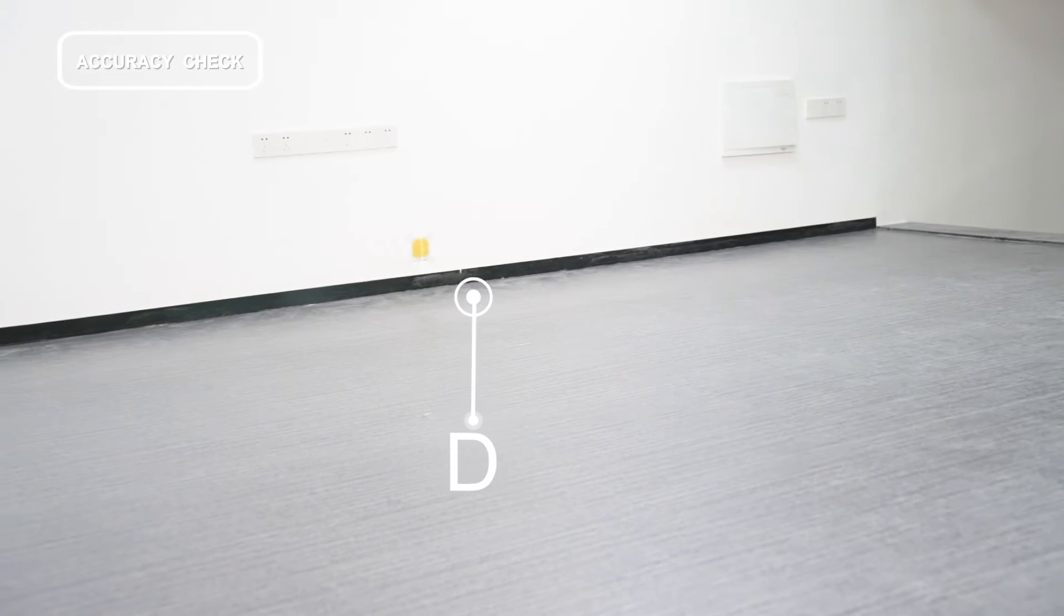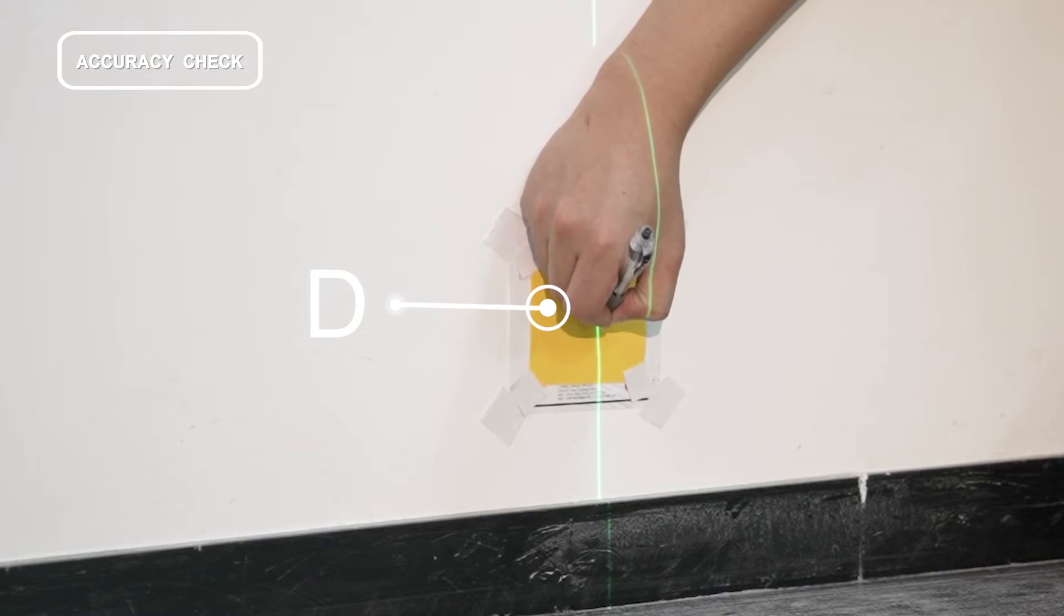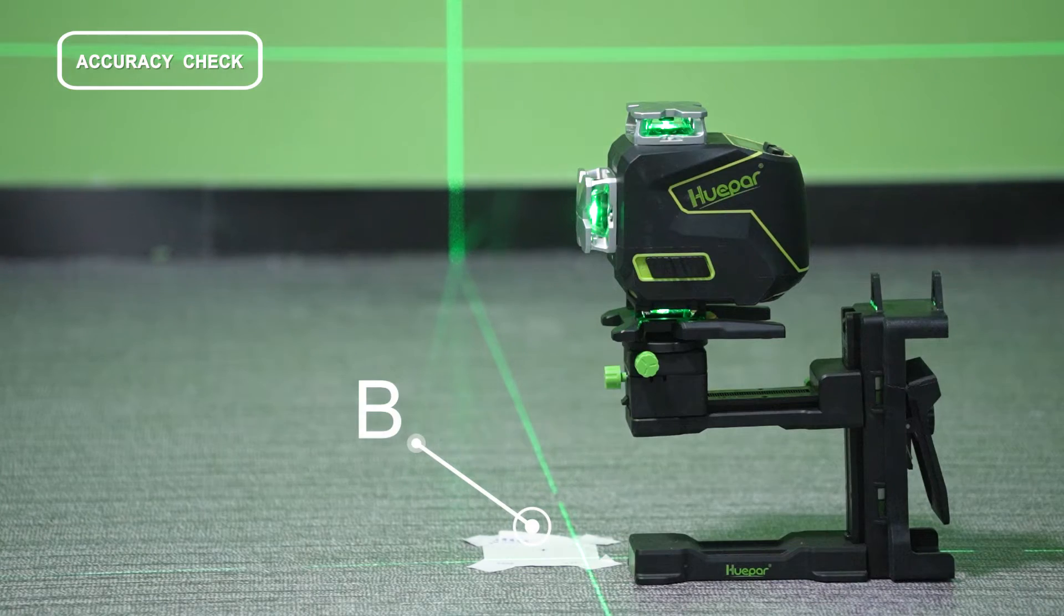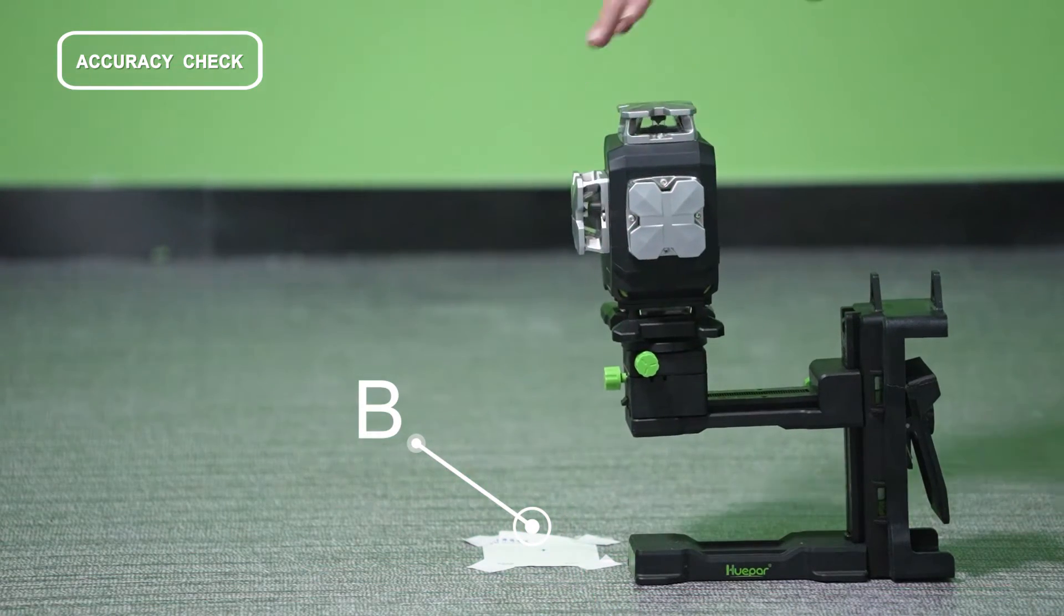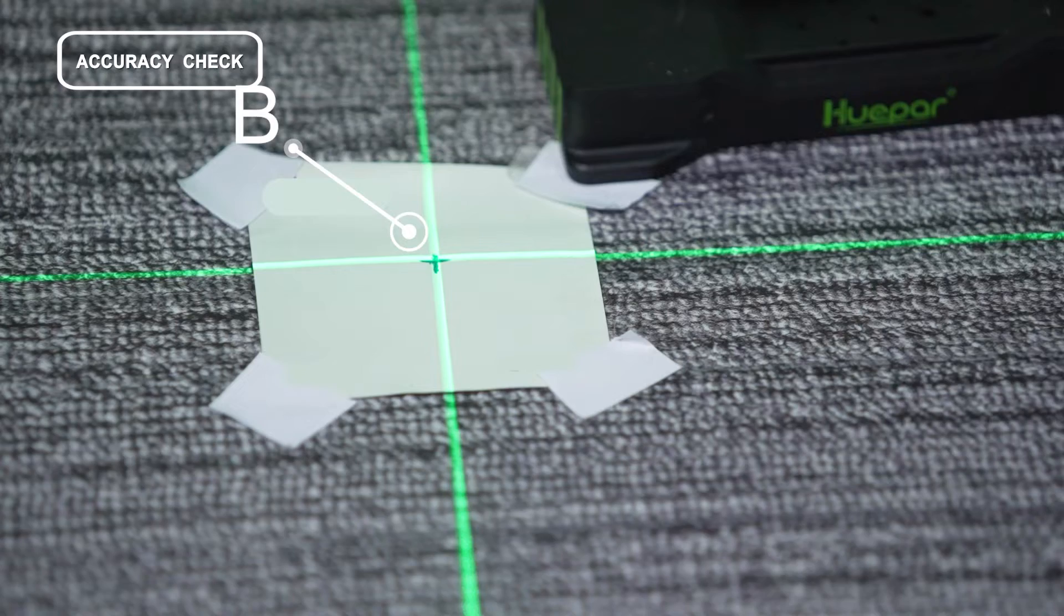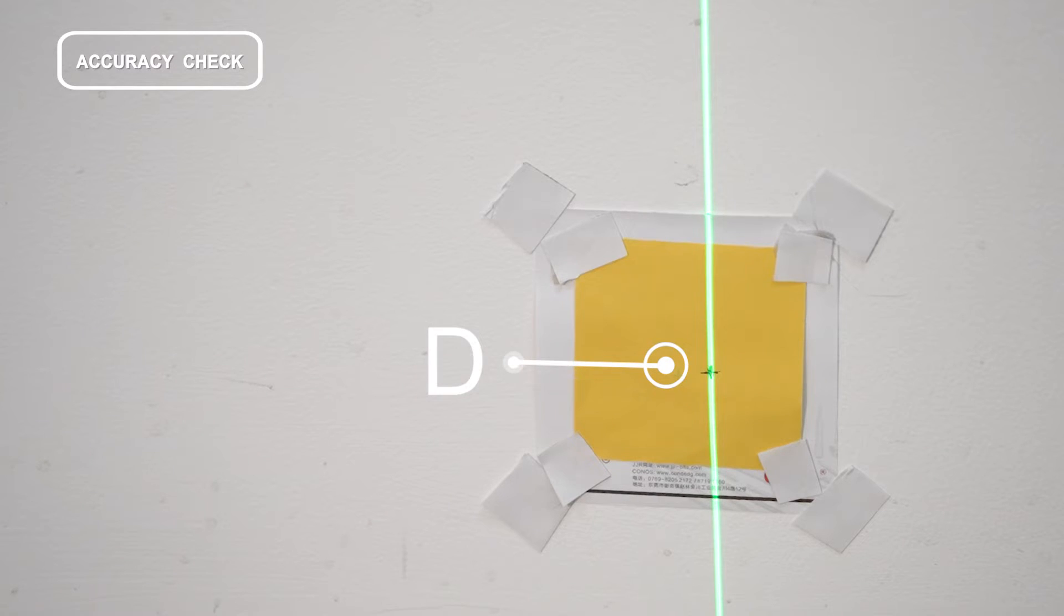Rotate the level horizontally by 90 degrees. Align the cross point at the bottom of the laser tool to mark B accurately, and align the laser beam of the side laser window with mark D.